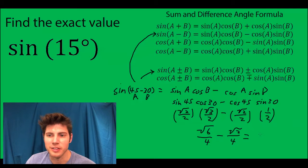And that can be simplified, since they have a common denominator, to √6 minus √2 over 4.